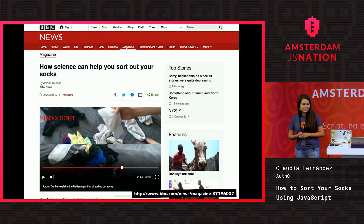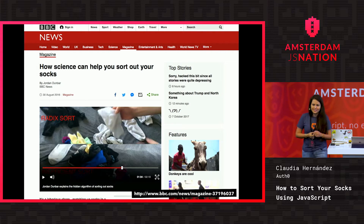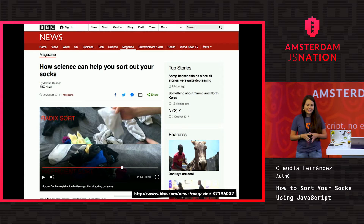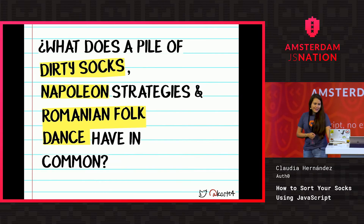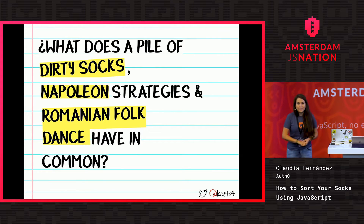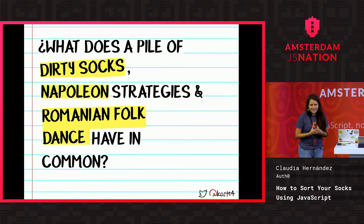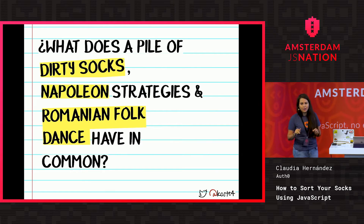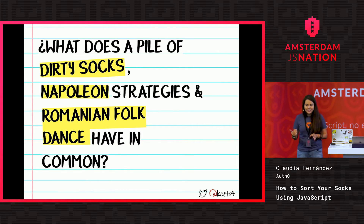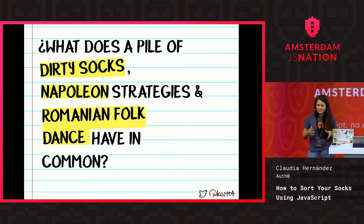Why did I call my talk this way? I saw an article on the BBC that said 'science can help you sort your socks with algorithms.' So I thought that was a fun title. Now, I came up with a tricky question to keep you paying attention. By the end of the talk, you should be able to answer: what does a pile of dirty socks, Napoleon's strategy — Napoleon Bonaparte, the French guy — and Romanian folk dance have in common? Keep paying attention to find out.